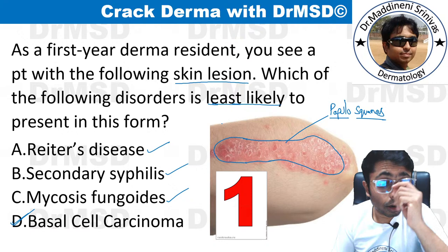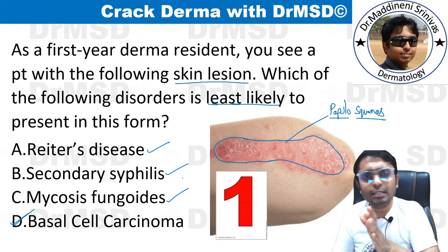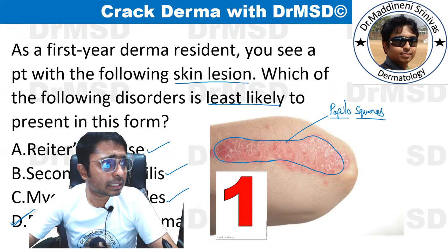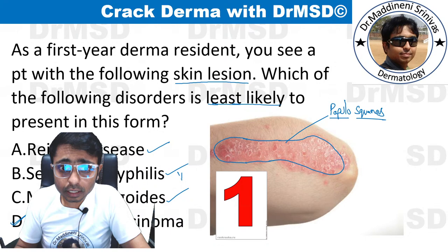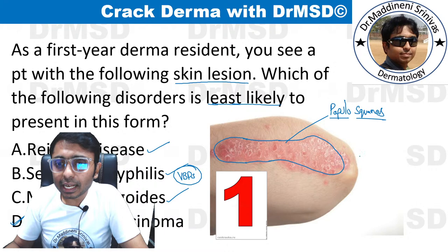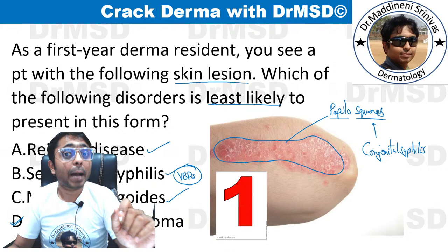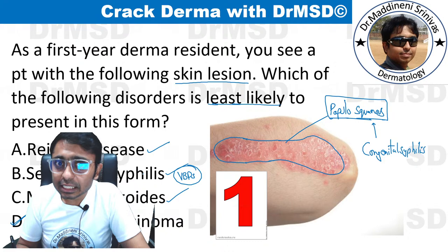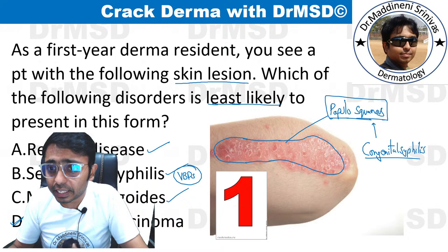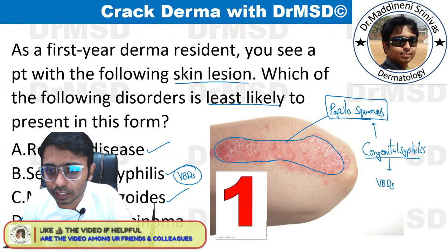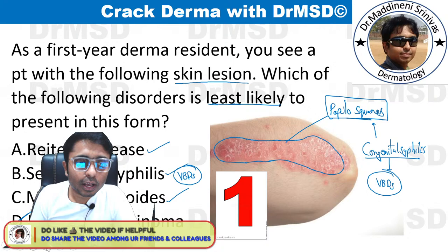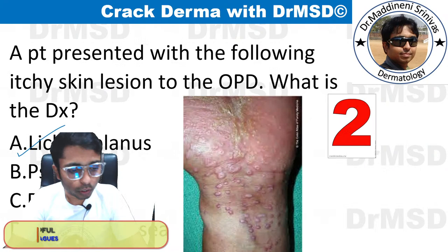An important point about syphilis: secondary syphilis is the type in which we do NOT see vesiculobullous disorders — vesiculobullous lesions are absent in secondary syphilis. In congenital syphilis, however, we do NOT see papulosquamous lesions — instead, children present with vesiculobullous lesions. So secondary syphilis has papulosquamous disorders but no vesiculobullous disorders, while congenital syphilis has vesiculobullous lesions but no papulosquamous lesions.